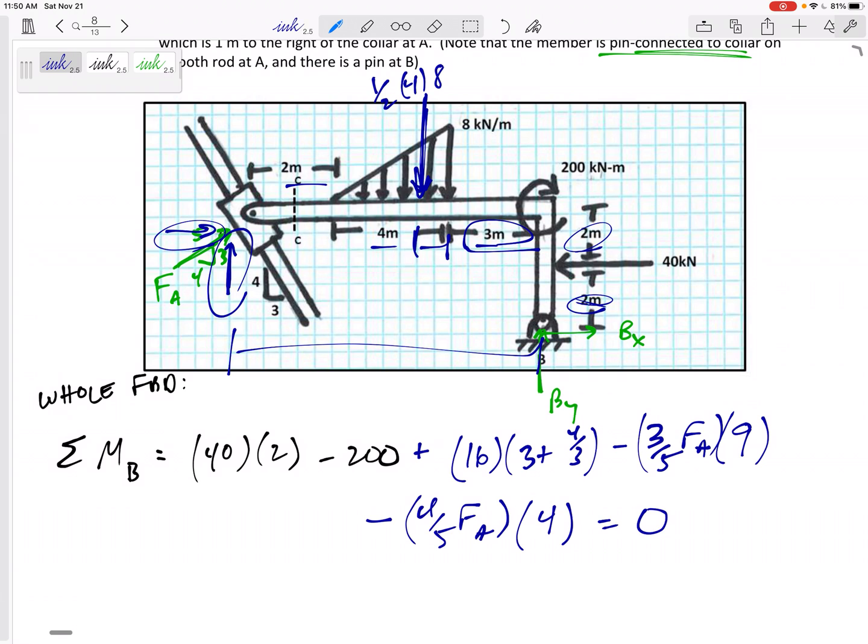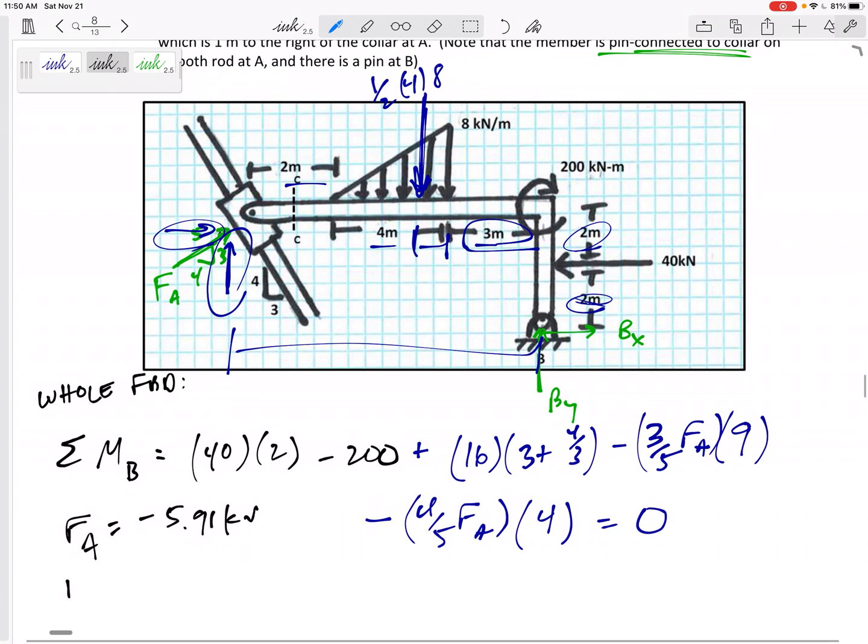Set that equal to zero, and solve for F_A. I've got F_A, actually, negative 5.91. What does that mean? Double-check me here. That means it's the other direction, 5.91 kilonewtons this way. And actually, maybe don't box that in because that's not any of my final answers. That's not a final answer.